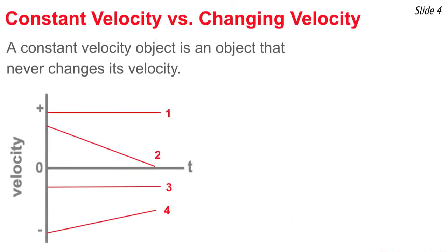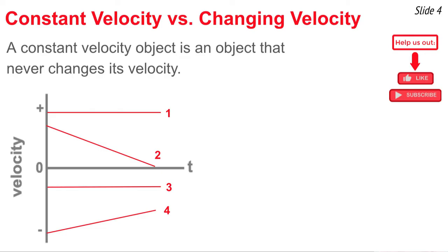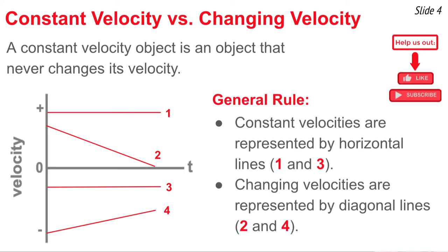Let's contrast the look of a velocity-time graph for an object with constant velocity versus one with changing velocity. Constant velocity means the velocity of the object isn't changing. So when we plot velocity as a function of time, the velocity value doesn't change, and the general rule is that constant velocity motions are represented by horizontal lines — like lines 1 and 3 on this graph. Changing velocities are represented by lines that aren't horizontal — for instance, diagonal lines, like lines 2 and 4.